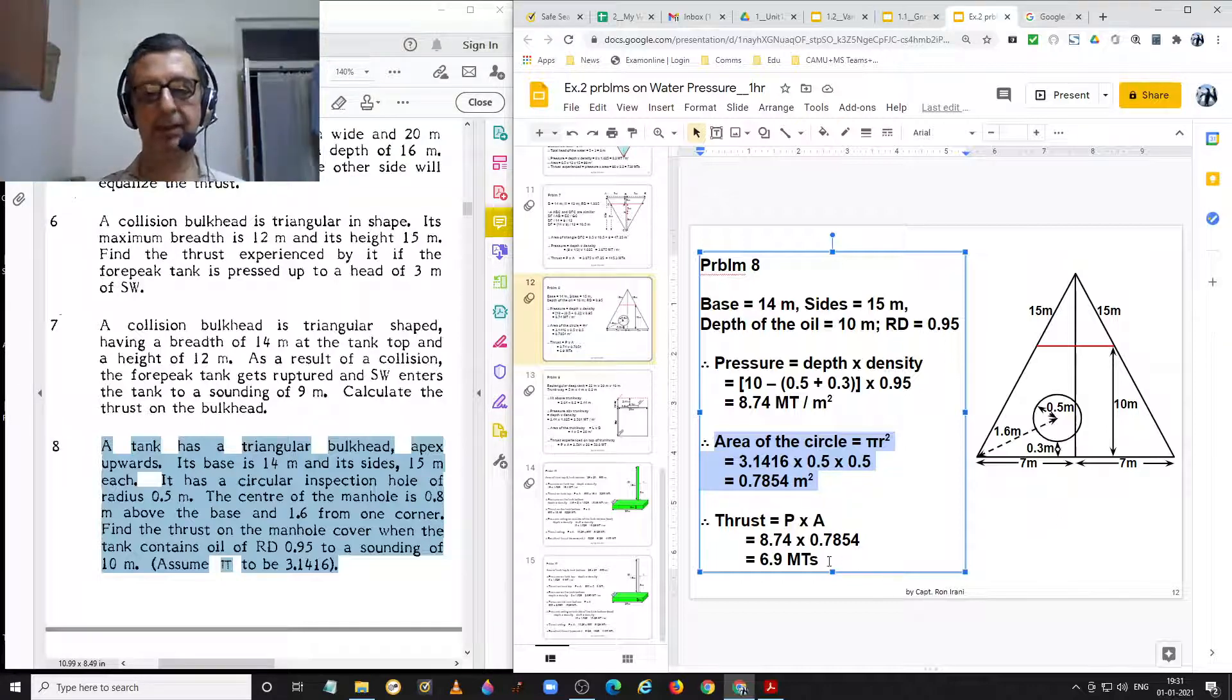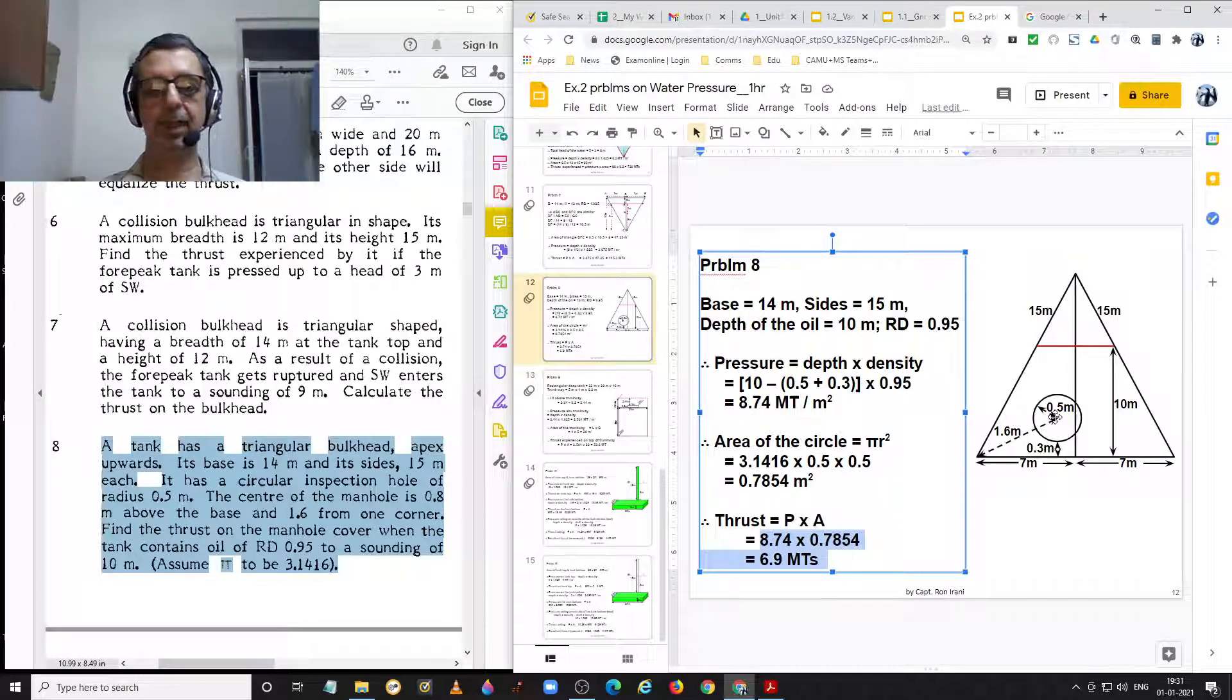Thrust is pressure into area. Pressure is 8.74 and area is 0.7854 thus giving us thrust at the center of this inspection manhole equal to 6.9 metric tons.